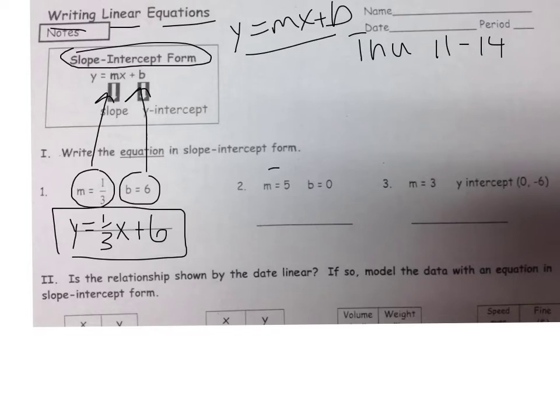On this one, we have our m and we have our b. Our b is actually 0 in this one. y equals, we take out m and we put in 5x plus 0. But we know they wouldn't write the plus 0, so this one just turns out to be y = 5x.